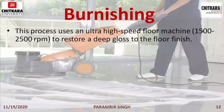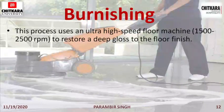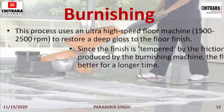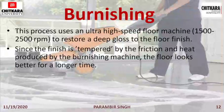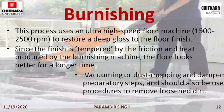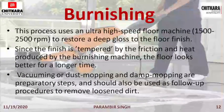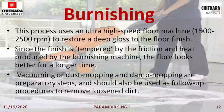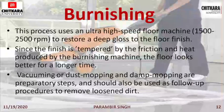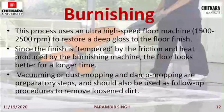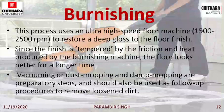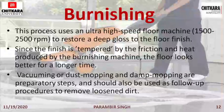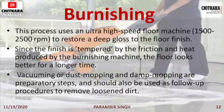Burnishing uses an ultra-high speed floor machine with an RPM of 1500 to 2500 to restore a deep gloss to the floor finish. Since the finish is tempered by the friction and heat produced by the burnishing machine, the floor looks better for a longer time. Vacuuming or dust mopping and damp mopping are preparatory steps and should also be used as follow-up procedures to remove loosened dirt. Before and after burnishing you need to clean the floor at regular intervals, and once burnishing is done you need to keep the floors clean so that the shine lasts for a longer duration.